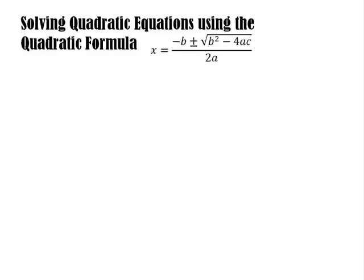Today we will be solving quadratic equations using the quadratic formula. The quadratic formula is: x is equal to negative b, plus or minus the square root of b squared minus 4ac, all over 2a. For those asking how to arrive at this formula, I discussed this in my previous video on how to derive the quadratic formula from the general quadratic equation.